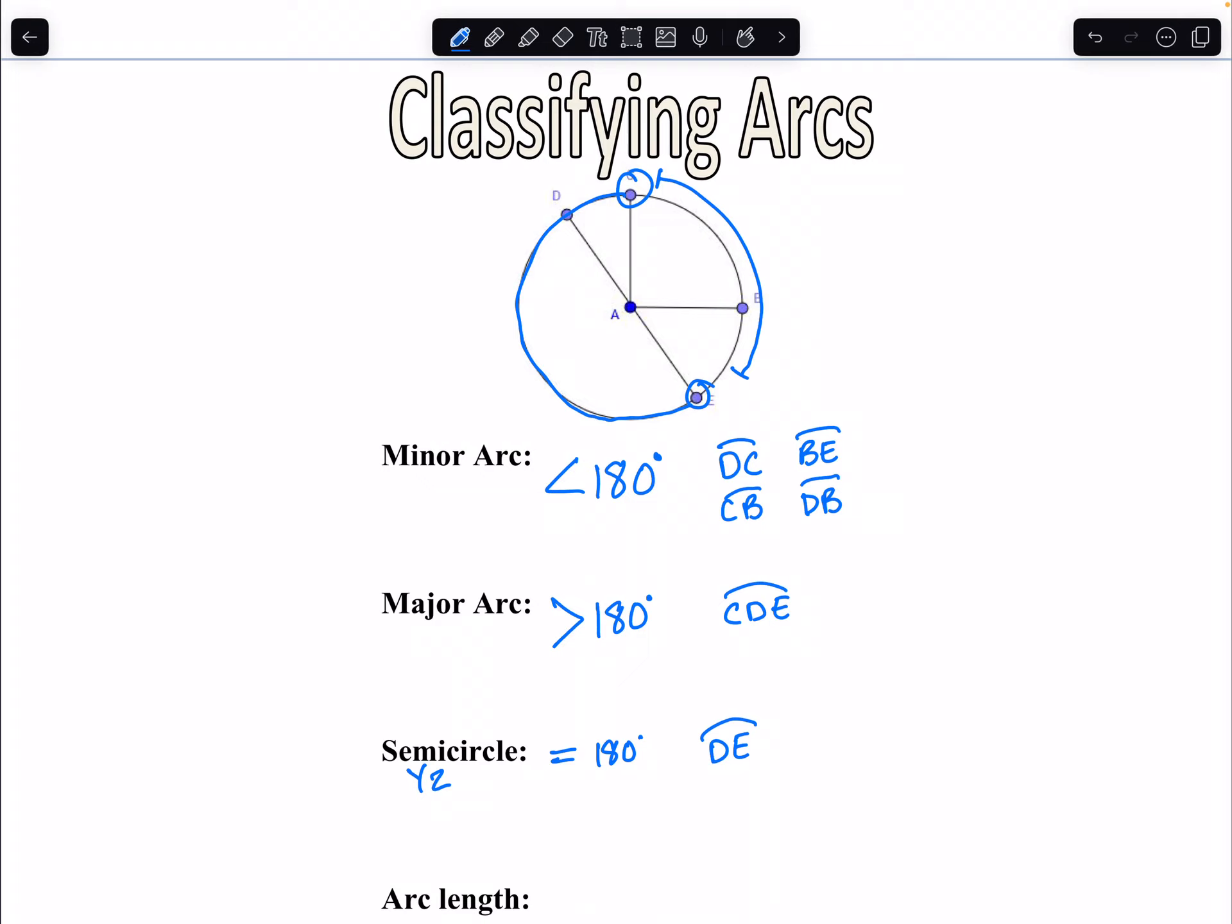A thing we're going to talk about today as a vocabulary word is also arc length. Arc length refers to the distance around the circle. We spoke about circumference as a full distance around the circle. Now we're looking for a partial distance around the circle. So we're looking for like part of the circumference, a piece of it.